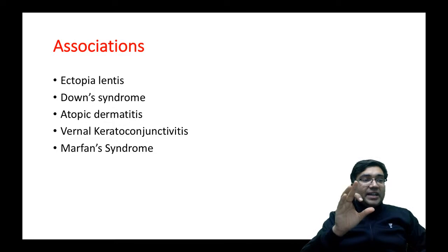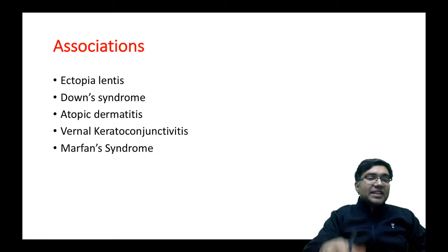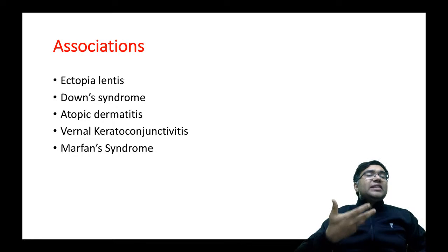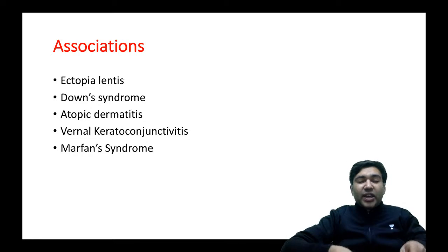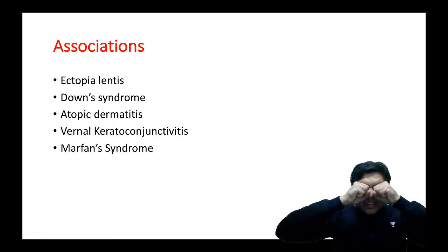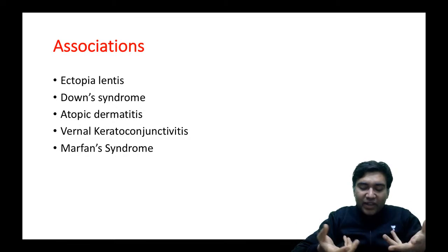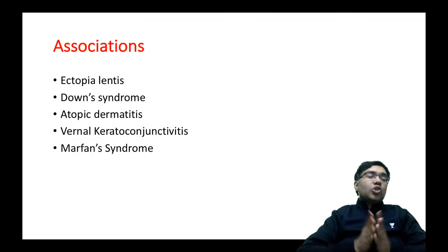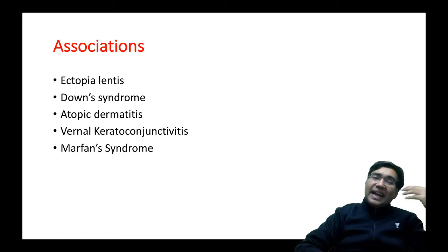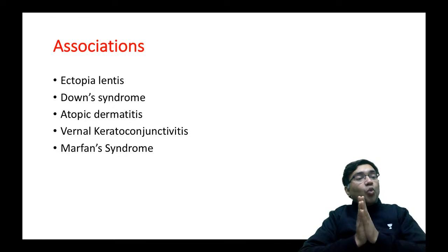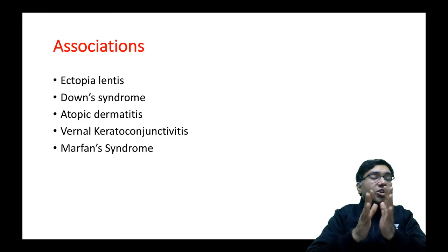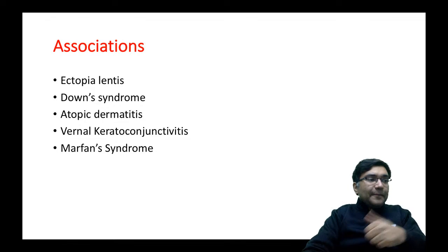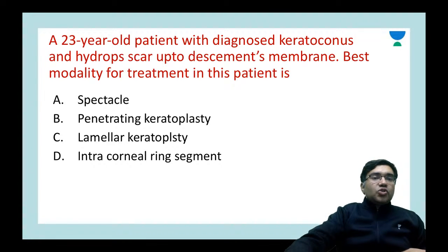The list of associations of keratoconus includes ectopia lentis, Down syndrome, atopic dermatitis, vernal keratoconjunctivitis, and Marfan syndrome. In atopic dermatitis and vernal keratoconjunctivitis, patients have a lot of itching, and rubbing of the eyeball can change corneal architecture — this is the hypothesis for the association.